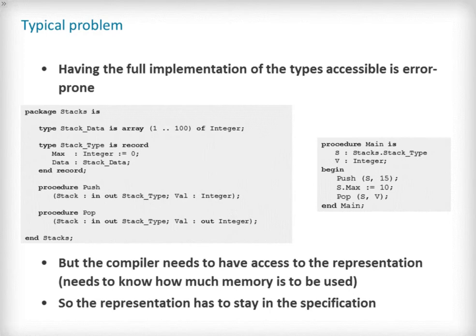In the following example we see two complete type declarations that expose their representation to the package user. An example user of said package can access the component parts of the types as shown in the example main procedure. This introduces maintenance issues and can lead to unintended uses of the package.